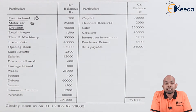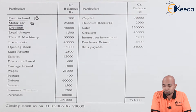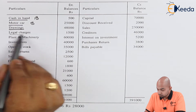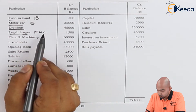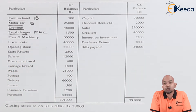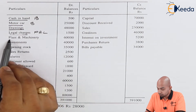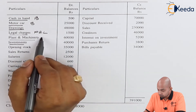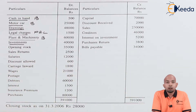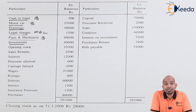Legal charges is a part of office and administrative expense, hence it will be a part of the profit and loss account. Plant and machinery again is an asset, hence it will be a part of the balance sheet asset side. Investment is also a part of the balance sheet asset side, forming a part of current assets or long-term assets.